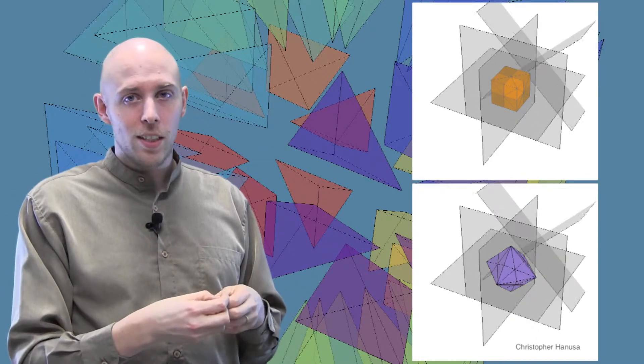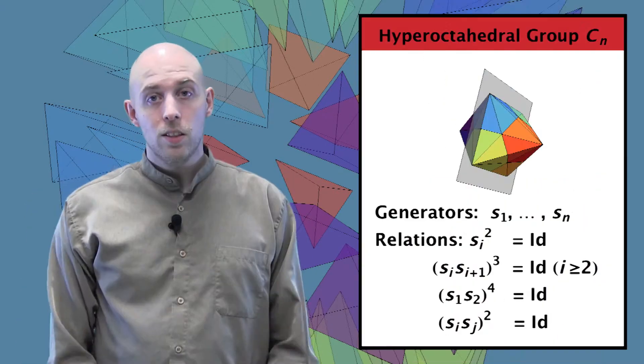Well, just as in the symmetric group case, we understood it as the permutations of one, two, three, four. We can understand the symmetry group of the octahedron as the set of signed permutations of plus or minus one, plus or minus two, and plus or minus three.